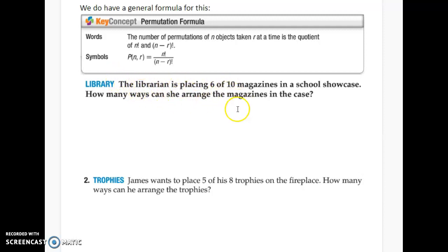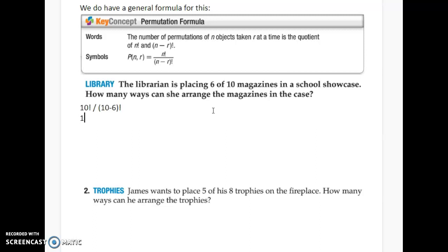So, a librarian is placing six of ten magazines in a school showcase. In how many ways can she arrange the magazines in the case? We're going to start with putting the total number factorial on top. So, since there's ten total magazines, I'm going to put that on top. And then I'm going to put ten minus, since we're choosing six, I'll put minus six on the bottom. And, of course, we know that ten minus six is four.